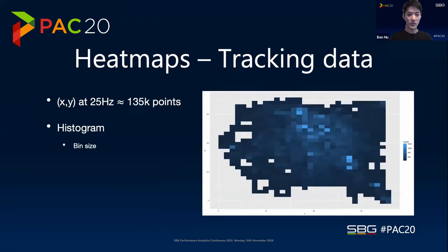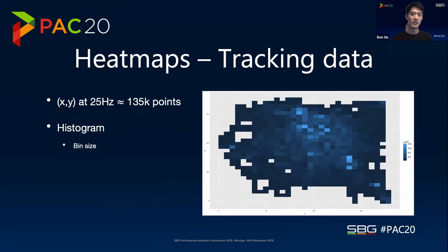So the obvious first step is to just histogram it. We pick a bin size — something like two meters by two meters squares — and we count how long he was in each of these bins, then assign a value and a color to that and map it out. And it's still not great; you get a lot of variability and we need to do some polish still.